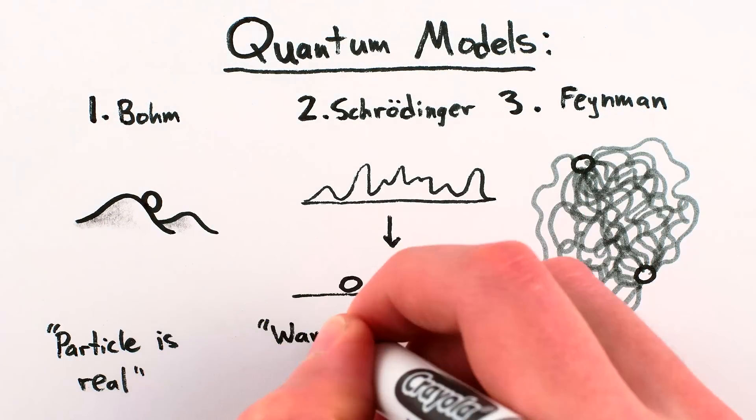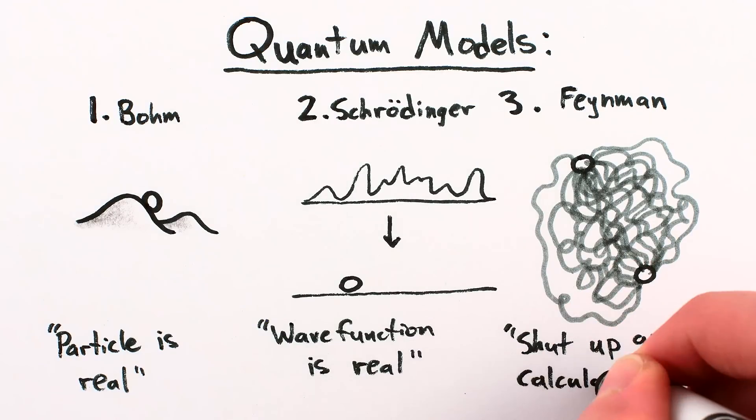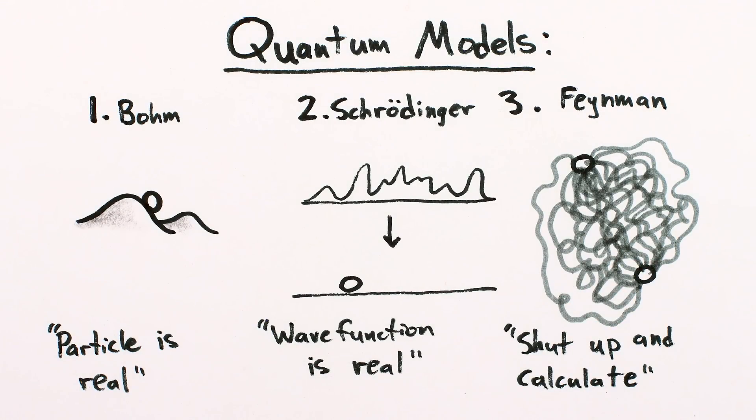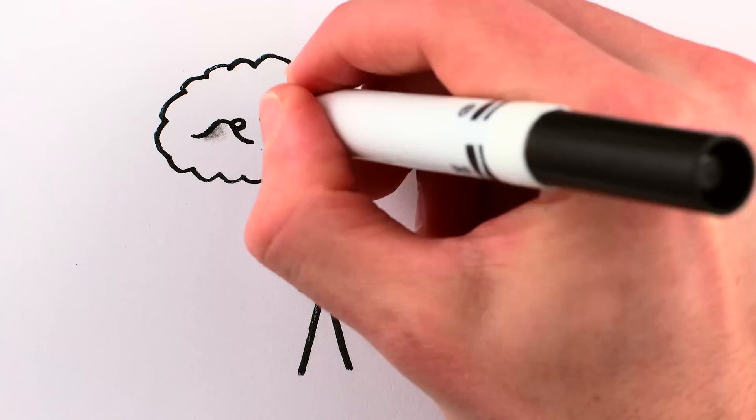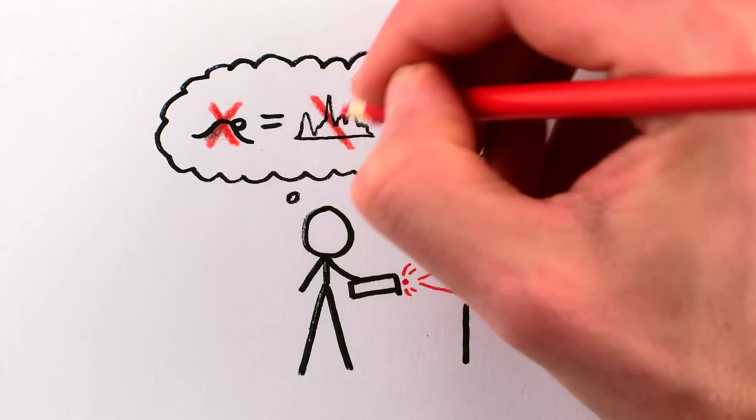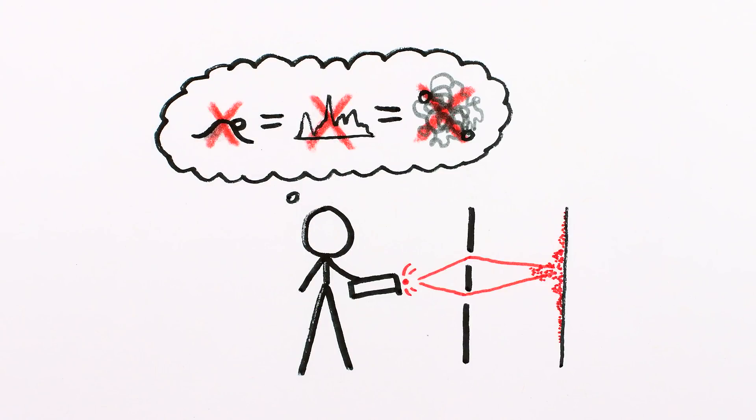All three of these mathematical models suggest different ways of thinking about what's actually going on in quantum systems. And the fact that all three of them give the same experimental predictions suggests that perhaps none of them is the right way to picture what's happening.